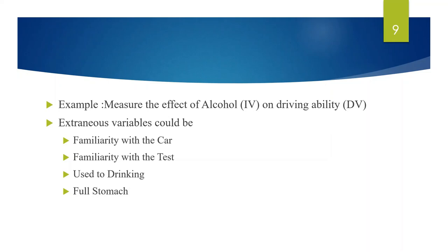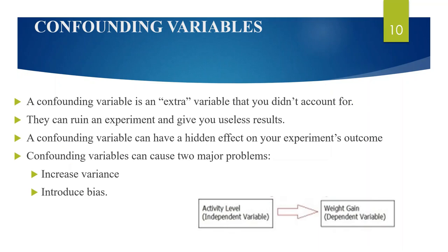Suppose we want to measure the effect of alcohol on driving ability. We should try to ensure that extraneous variables did not affect the results. These variables could include familiarity with the test (as some people may do better because they know what to expect), being used to drinking (as the effects of alcohol on some people may be less because they are accustomed to it), and full stomach (as the effect of alcohol may be less for those who have just had a big meal). If these extraneous variables are not controlled, they may become confounding variables because they could affect the results of the experiment.